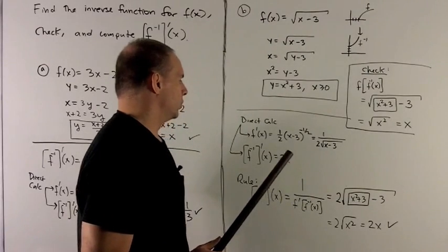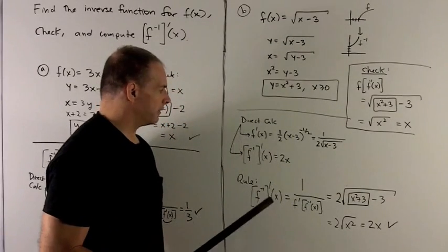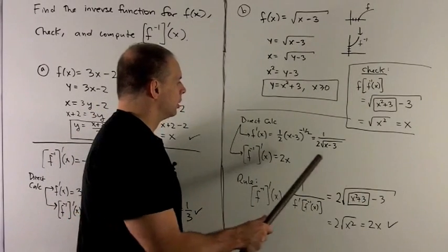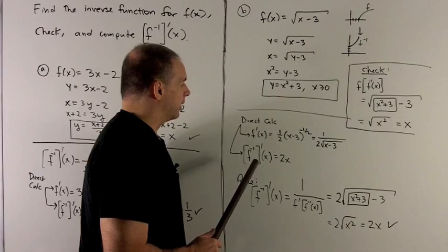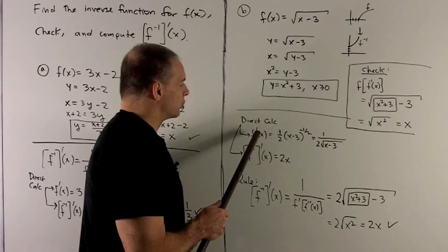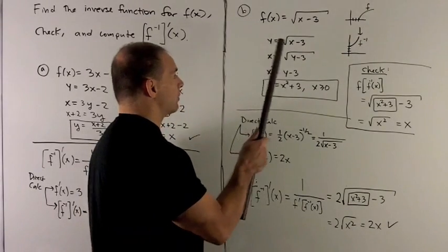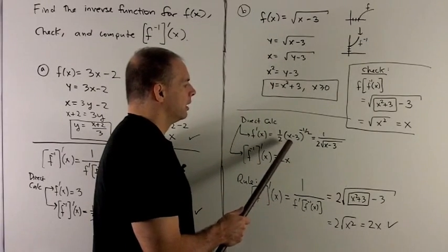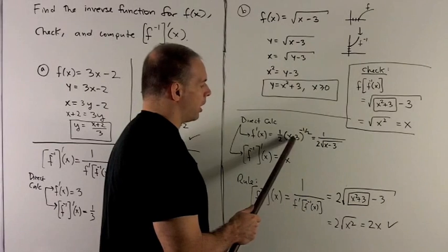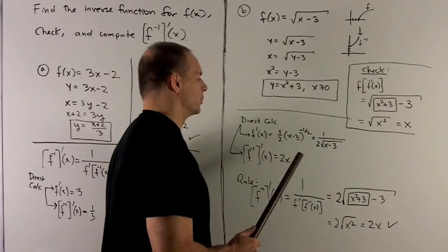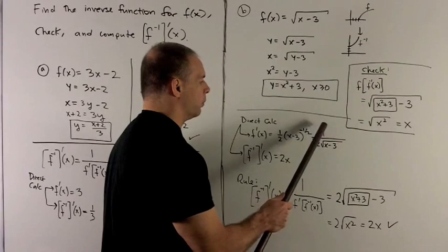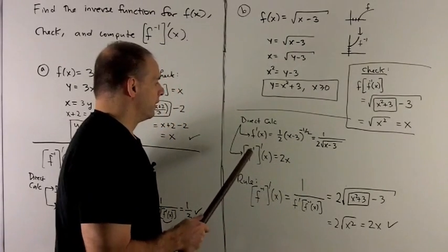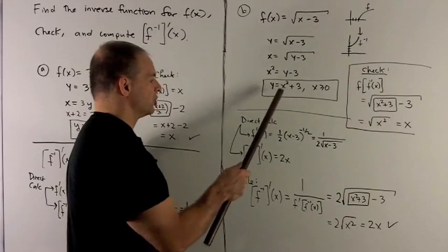Let's move on to the derivative of the inverse. So let's first calculate what our derivatives are going to be by hand. If I take the derivative of my original function, this is (x - 3) to the 1/2. I bring my 1/2 down, subtract 1, and then derivative of the inside is just 1, so we don't have to worry about that, so the chain rule isn't too complicated. And then cleaning this up, it's going to give me 1 over 2 radical (x - 3). The derivative of my inverse function is just 2x.